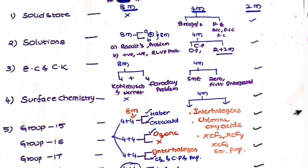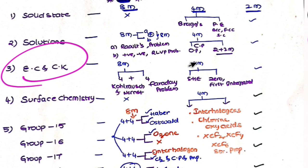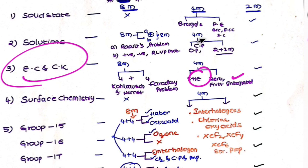Next, from electrochemistry - along with 8 marks, there are also 4 marks questions. Standard hydrogen electrode is an important question here. Also from Solutions chapter, there are additional 4 marks questions.